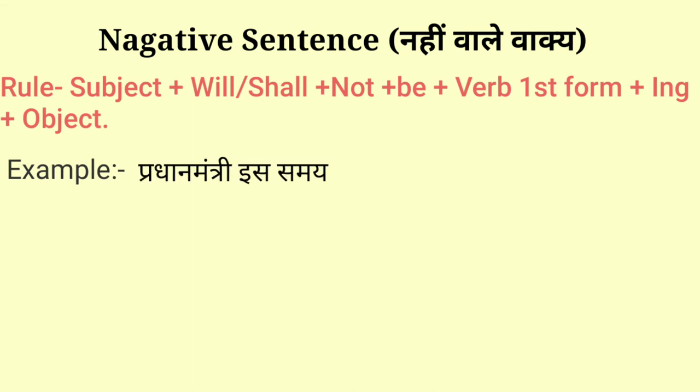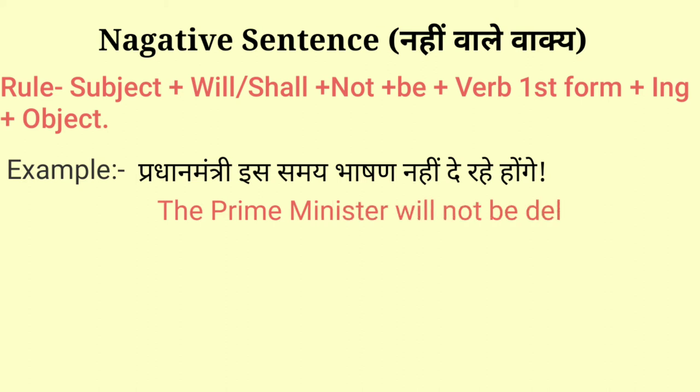For example: 'Pradhan Mantri is samay bhashan nahi de rahe honge' — The Prime Minister will not be delivering a lecture at this time. In this, 'Prime Minister' is the subject, 'will be' is the helping verb, 'not' is used for nahi, 'delivering' is verb first form + ing, and the rest is the object.